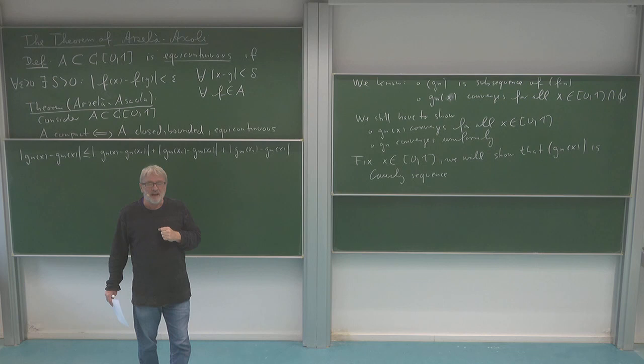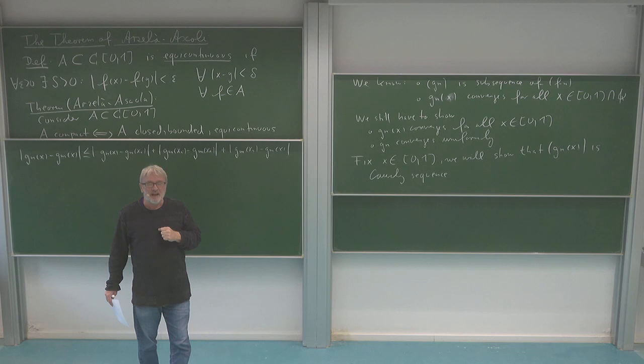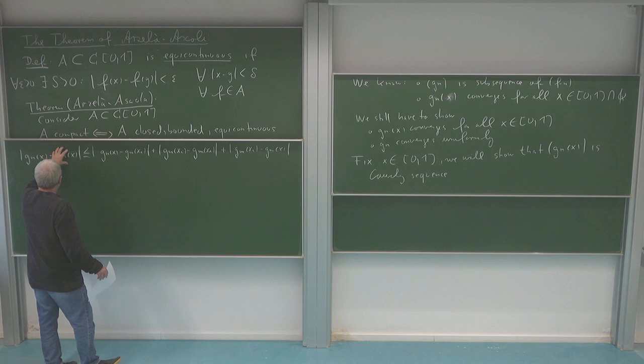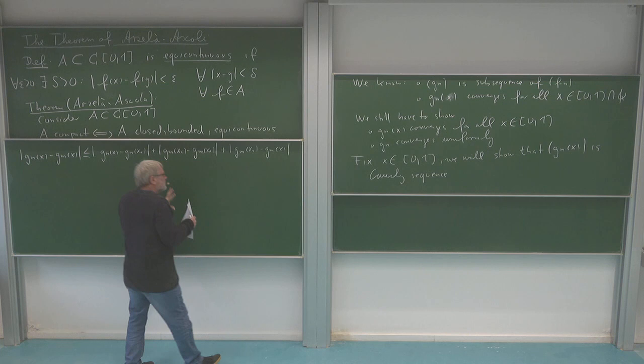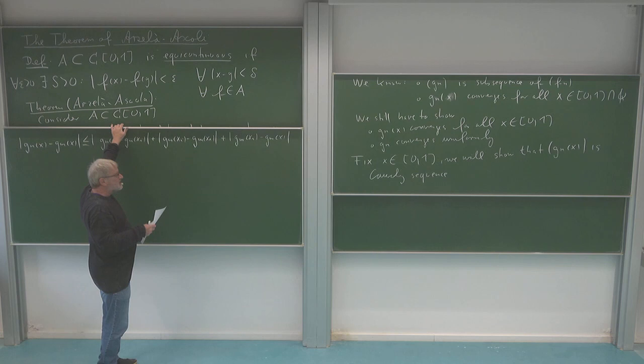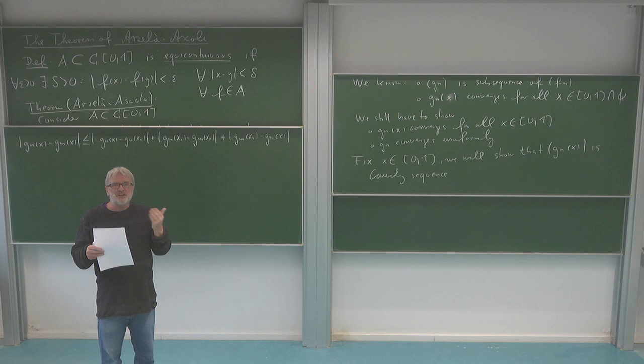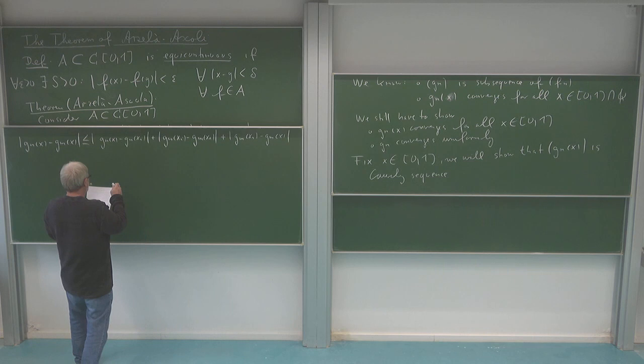We have added and subtracted GM of XI and then done this estimate. I want to get the Cauchy property at the point x by using that we have the Cauchy property at the point XI. Of course we have to control the mistake we make by going over from x to XI, but this we can do in a way which is actually independent of the indices.